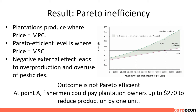The graph shows plantations produce where price equals MPC at point A — 80,000 tons. The Pareto efficient level is where price equals MSC — 38,000 tons. The negative external effect leads to overproduction and overuse of pesticide. The outcome is not Pareto efficient. Both parties can be made better off by cutting back production to the point where P equals MSC.